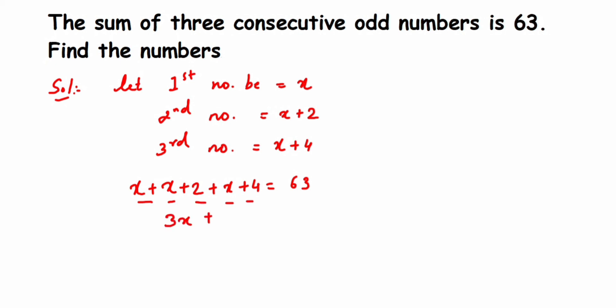Now transpose 6 to the other side, it becomes 3x equals 63 minus 6. So this is going to give us 57. So 3x equals 57. Now bring this 3 down, so x will be equal to 57 divided by 3. Just cancel them, you will get the answer 19.